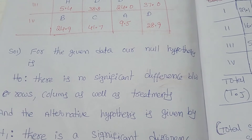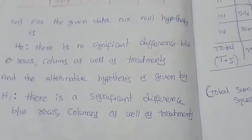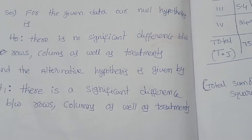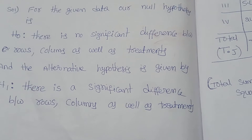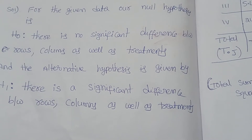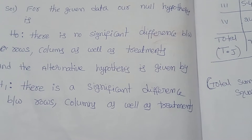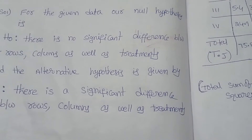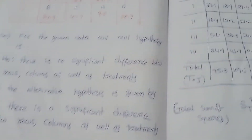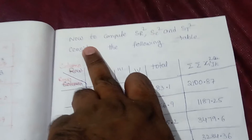The alternative hypothesis H₁ is that there is a significant difference between rows, columns, as well as treatments. Next, coming to the calculation table — before the calculation table, what we are computing is SR², SC², and ST².